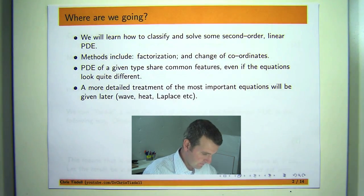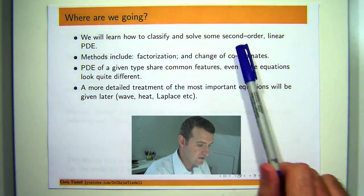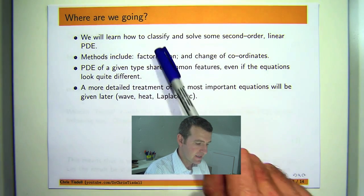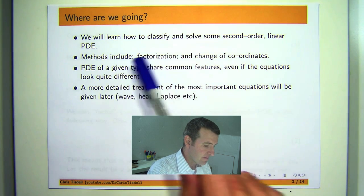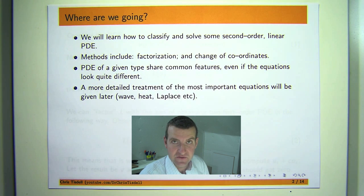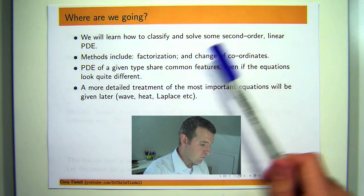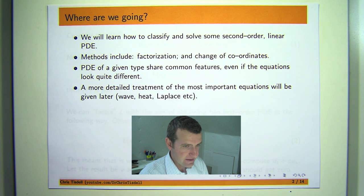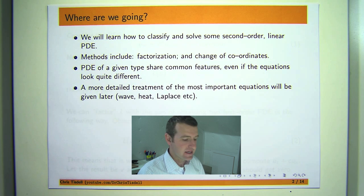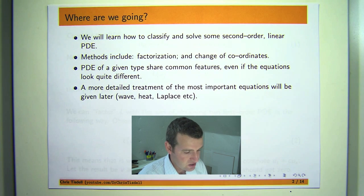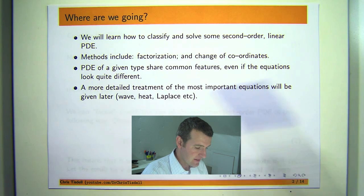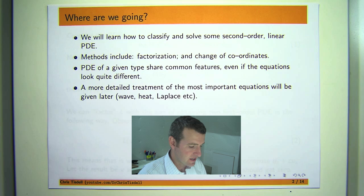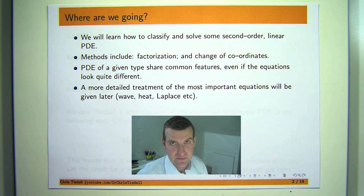We're going to look at second order PDE with constant coefficients, and discover how to form general solutions to these problems. We'll concentrate on second order linear PDE, discover how to classify and build general solutions to them. The methods include factorisation and change of coordinates. One motivation for classifying types of PDEs is that classes of PDEs share common features, even if the equations can look quite different. In other videos I'll give a more detailed treatment of the most important equations together with boundary conditions or initial conditions.